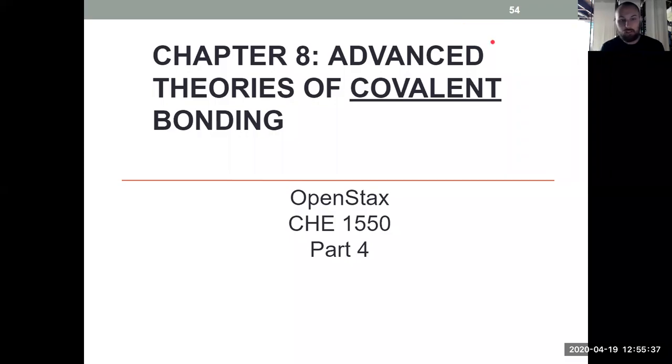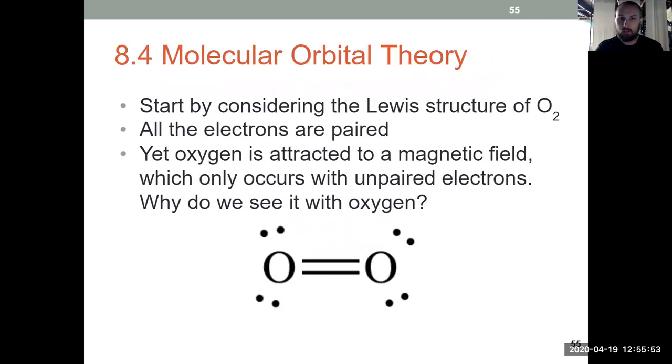For our last video from Chapter 8, we're going to explain two of the failures of valence bond theory: that it doesn't explain resonance or paramagnetism, a term we'll define here shortly. What does explain those two phenomena is something that's known as molecular orbital theory, or MO theory.